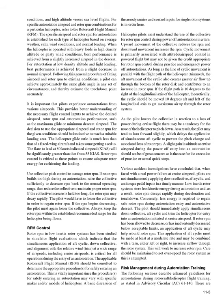The specific airspeed and rotor RPM for autorotation is established for each helicopter type based on average weather, calm wind conditions, and normal loading. When operating with heavy loads in high-density altitude or gusty wind conditions, best performance is achieved from a slightly increased airspeed in the descent. For autorotation at low-density altitude and light loading, best performance is achieved from a slight decrease in normal airspeed. Following this general procedure, a pilot can achieve approximately the same glide angle in any set of circumstances, and thereby estimate the touchdown point accurately.